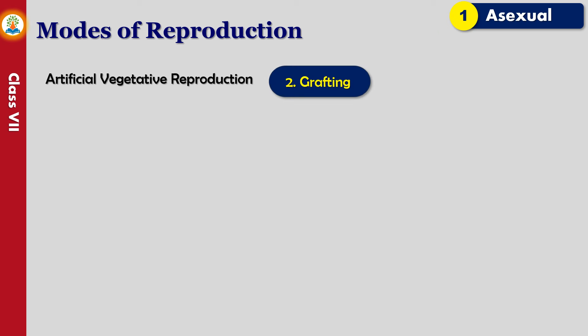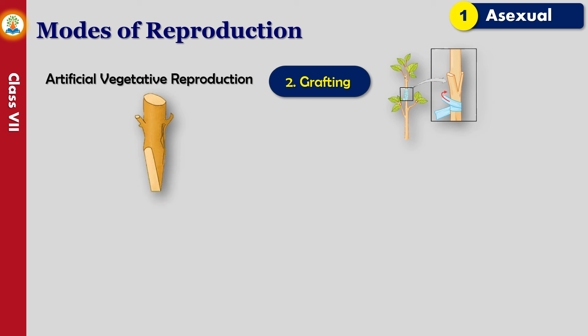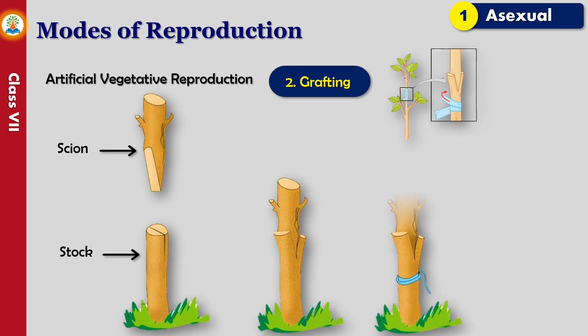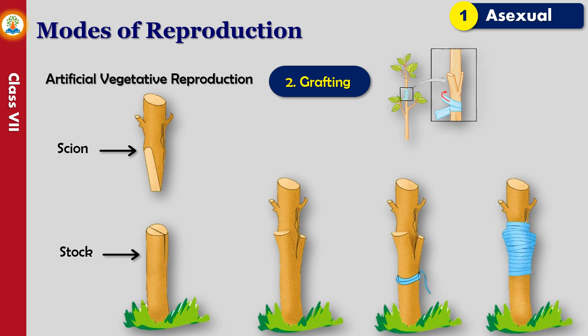In the grafting method, parts of the plant are joined to grow together. These parts can be of the same type of plant or of different types. The plant that has a well-developed and sturdy root system is used as the stock. The other part of a plant grafted onto the stock is known as the scion. The two parts are placed so that their vascular tissue joins together to successfully grow as a single plant.